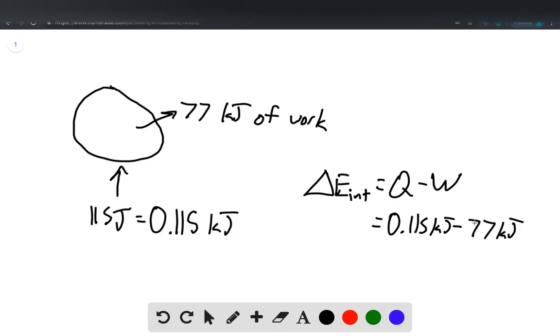And our W in this case is a positive number because work is being done by the system, and our Q is a positive number since heat is being put into the system.